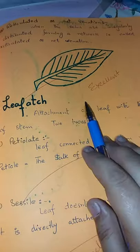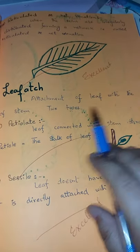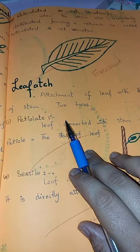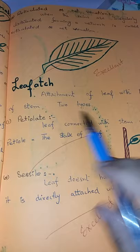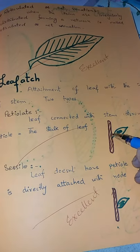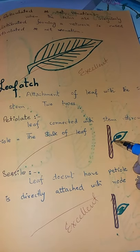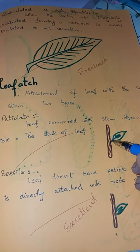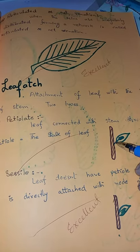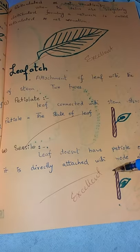Leaf attachment refers to how the leaf is connected to the stem. If the leaf is petiolate, it has a petiole — a stalk attaching the thin leaf blade to the stem. A petiolate leaf requires a petiole for attachment.